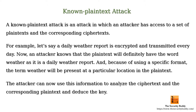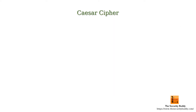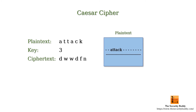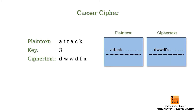Some historical ciphers like the Caesar cipher are also vulnerable to the known plaintext attack. In the Caesar cipher, each letter of the plaintext is replaced by a letter which is a fixed number of positions around the alphabet, and that fixed number of positions is called the key. For example, if the key is 3 and the plaintext is 'attack,' then the corresponding ciphertext will be shown. So if an attacker knows that the word 'attack' is present at a particular position in the plaintext and knows the corresponding ciphertext, the attacker can easily deduce that the key is 3.